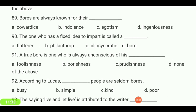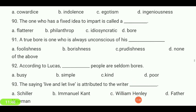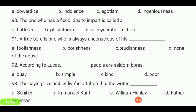The one who has a fixed idea to impart is called — flatterer, philanthropic, idiosyncratic, or a boar? Your answer is 'boar.' A true boar is one who is always unconscious of his — foolishness, boorishness, prudishness, or none? Your answer is 'boorishness.'